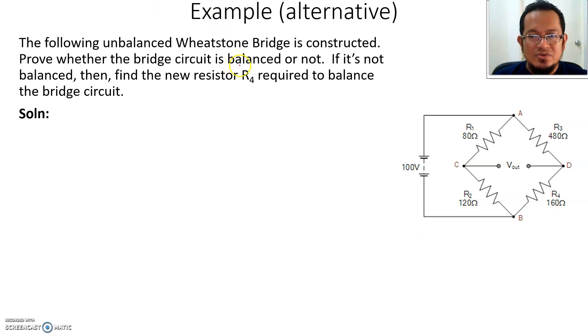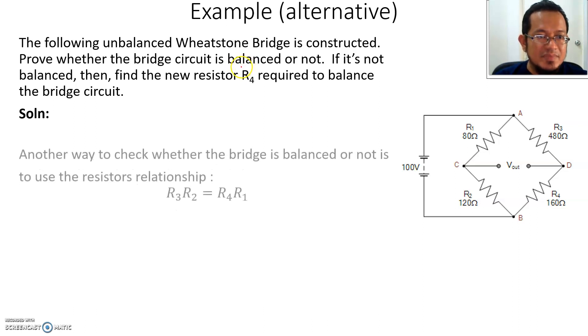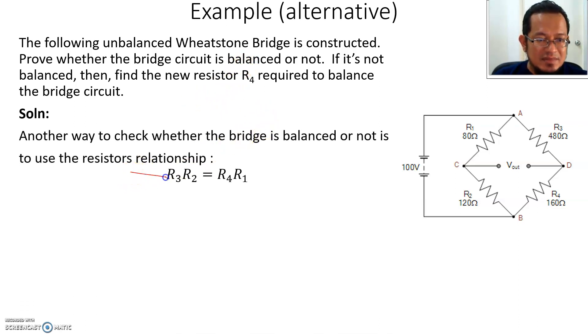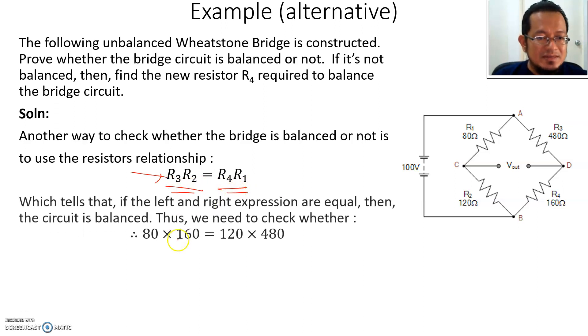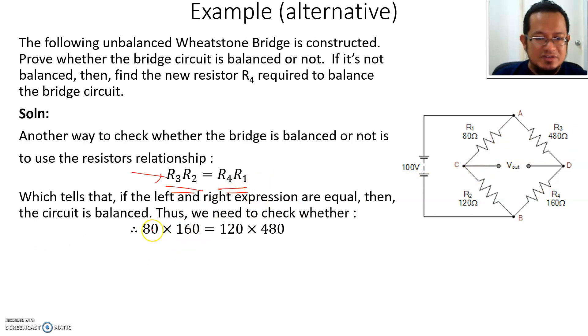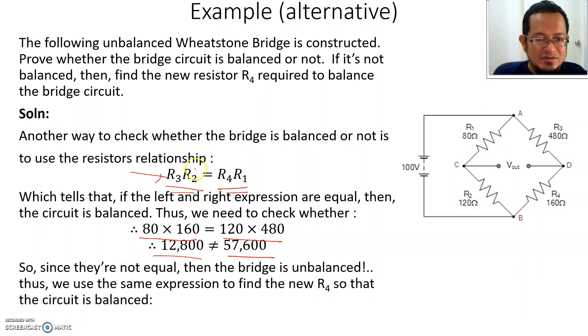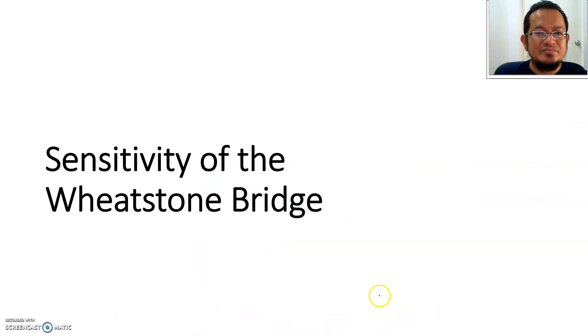Alternatively, we can prove whether the Wheatstone bridge is balanced or not by using this same expression. If the bridge is balanced, we know this equation must be true at all times. As you can see, if you put all four resistors in this equation, on the left-hand side is 80 by 160, on the right-hand side is 120 by 480, and you multiply them together, both numbers are not equal. If it's balanced, it must be equal. You can show that the left-hand side and right-hand side values are not equal, so the bridge is unbalanced. We can use this same expression to find the new R4 as before.